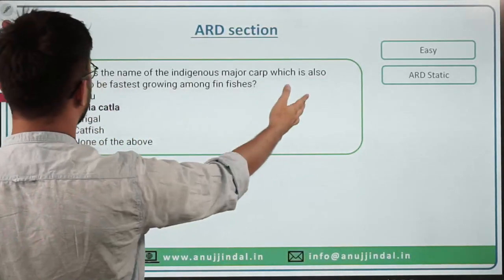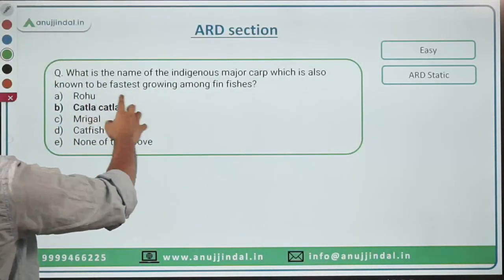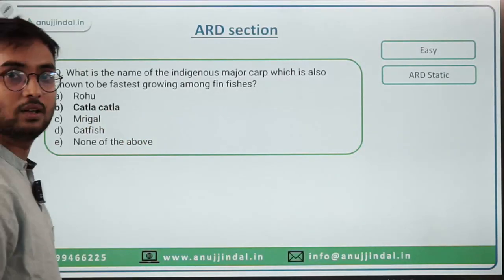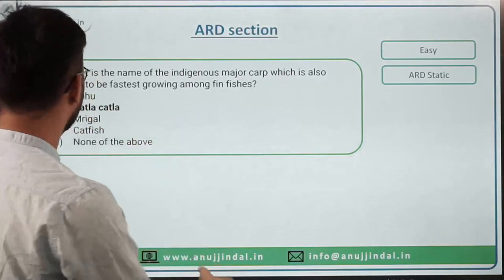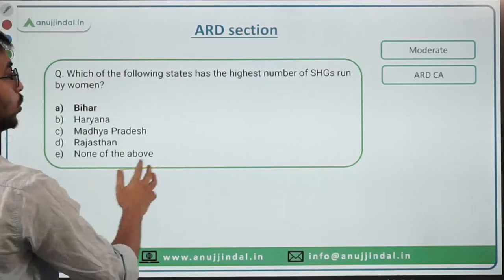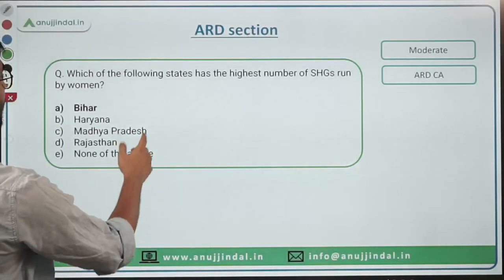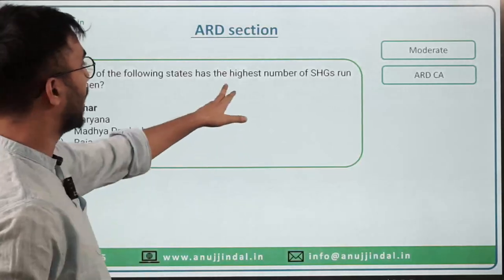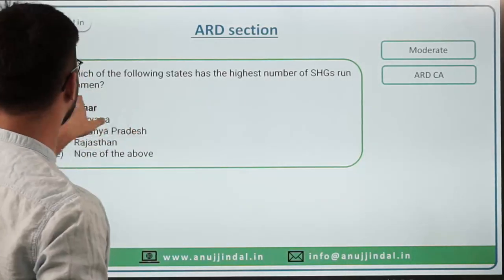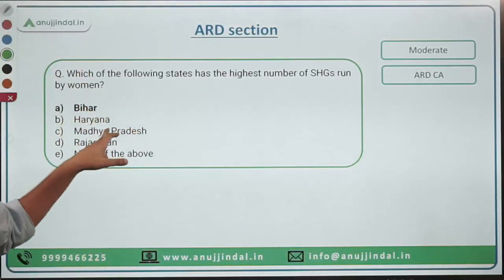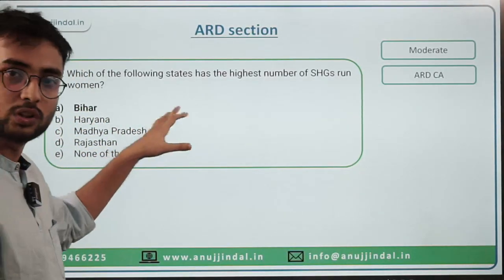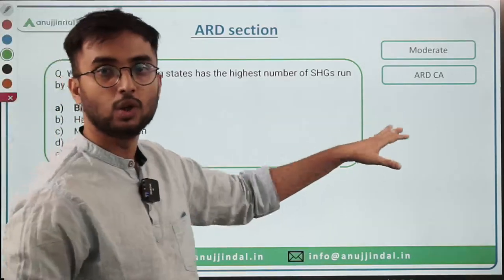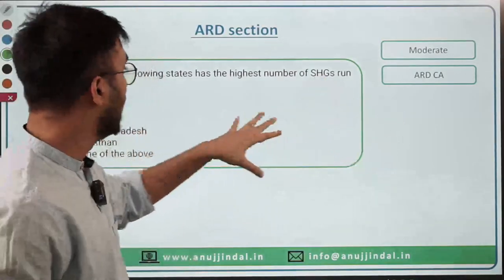'Indigenous major carp known as the fastest growing among fish' — This is Catla-catla. 'Highest number of SHGs run by women' — This is Bihar, a current affairs news item. These examples show how questions come from either static, current affairs, or general awareness categories.